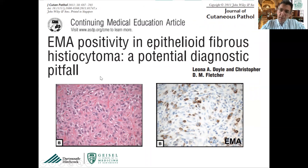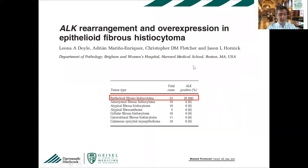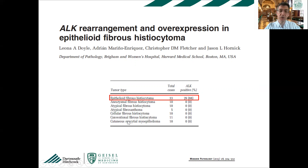One pitfall before more specific immunohistochemical stains were available: epithelioid fibrous histiocytoma can show diffuse, focal, or multifocal positivity for EMA. However, now we know that the great majority of epithelioid fibrous histiocytomas have ALK rearrangements, which translates to ALK protein expression. About 80% are ALK-positive, and every other fibro-histiocytic tumor in the differential was actually negative for ALK.